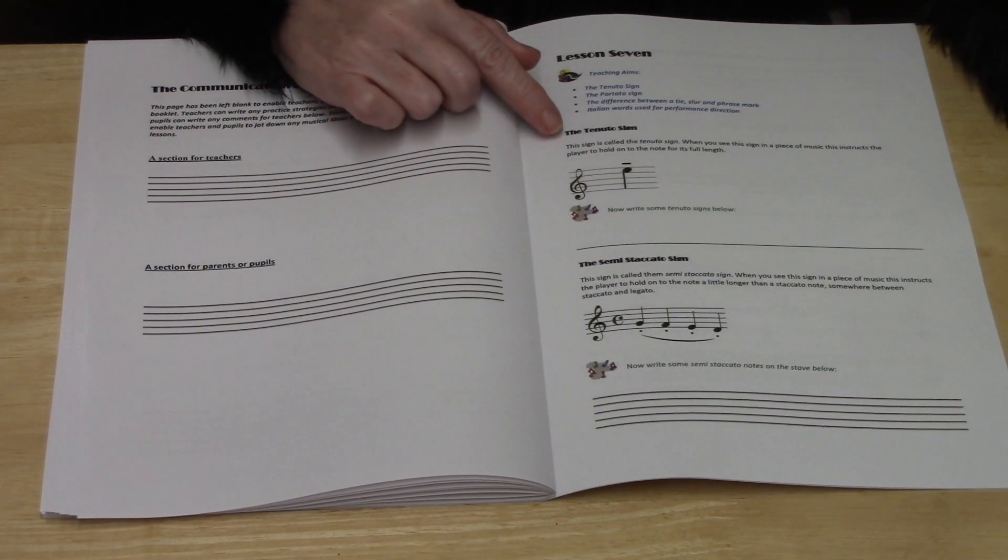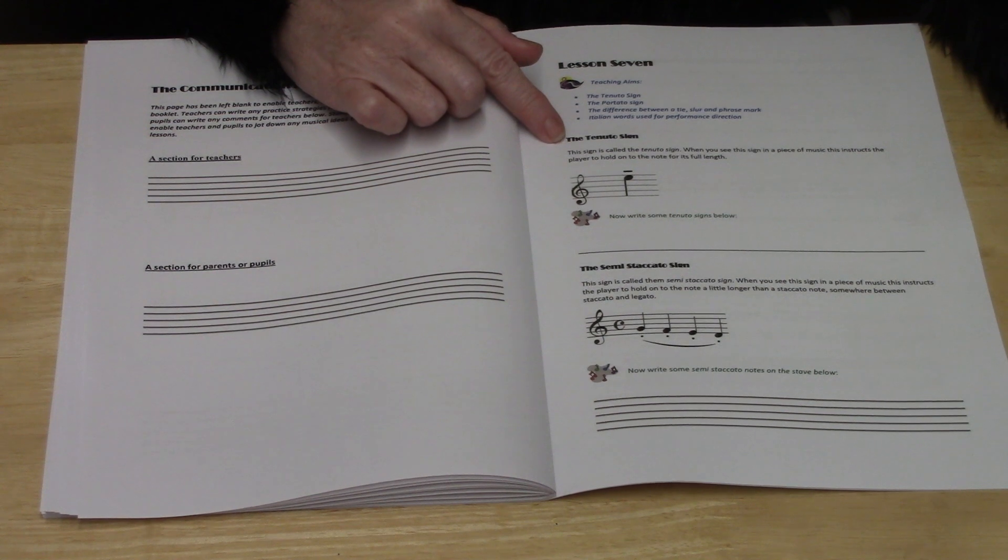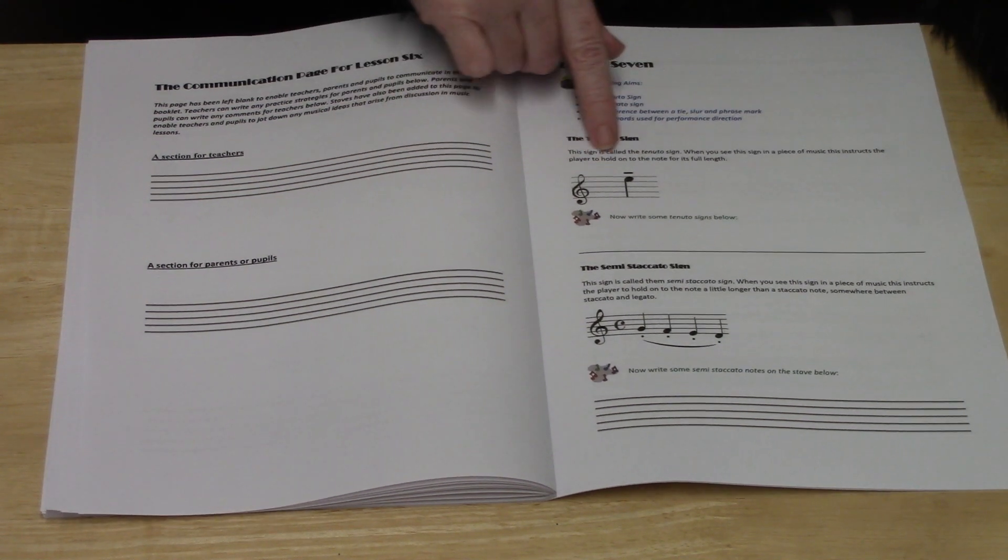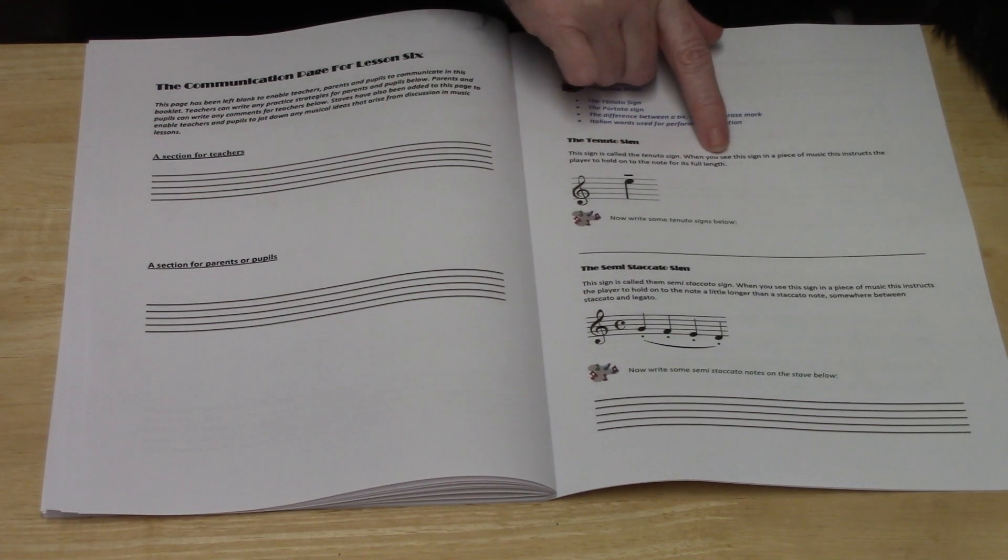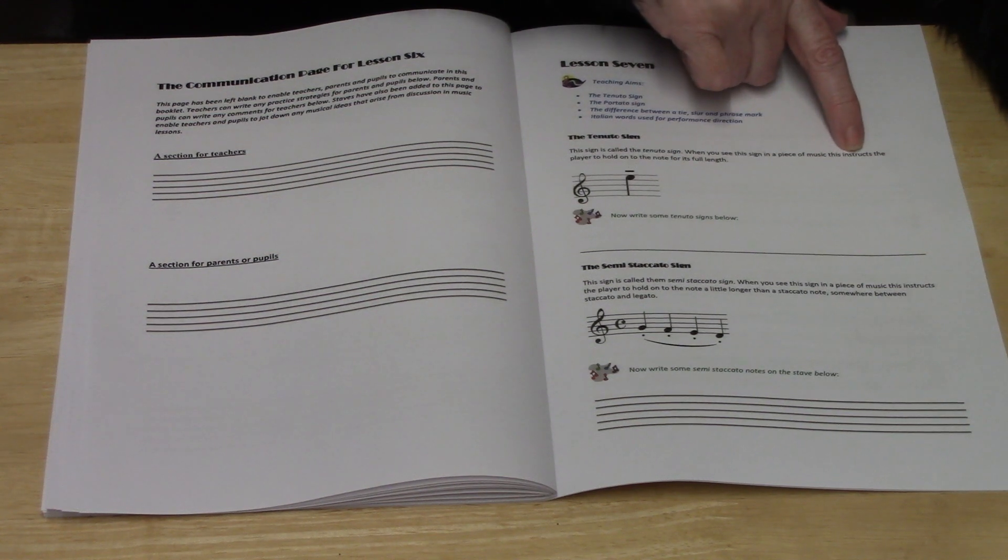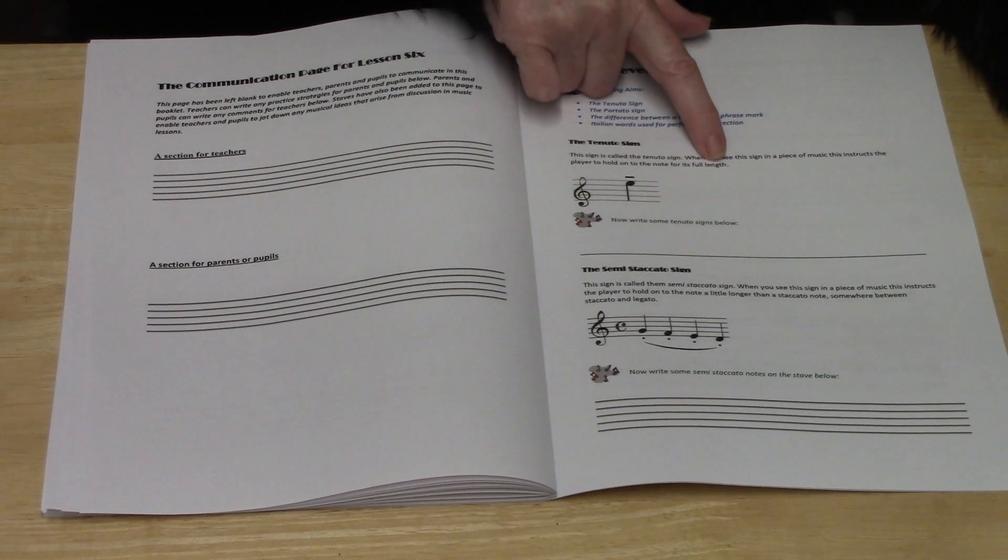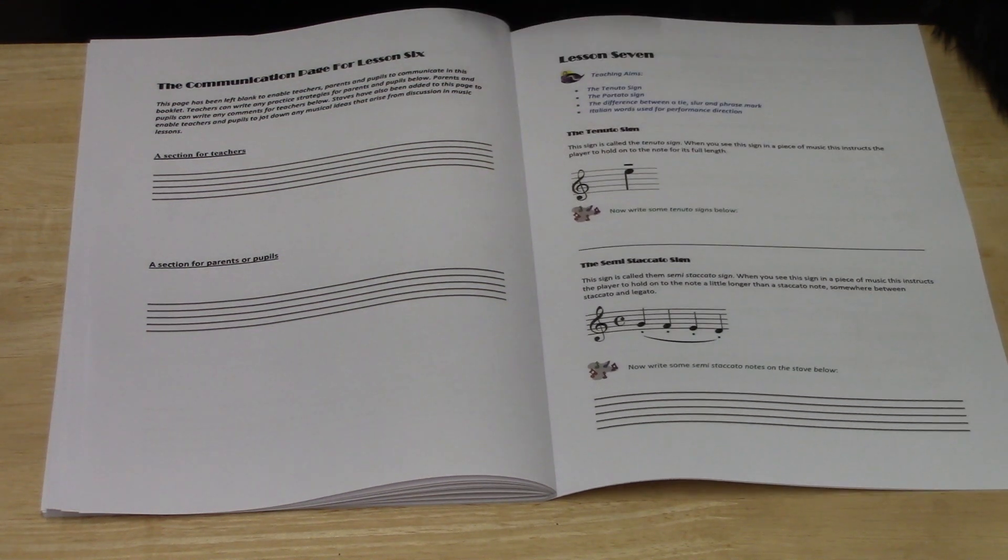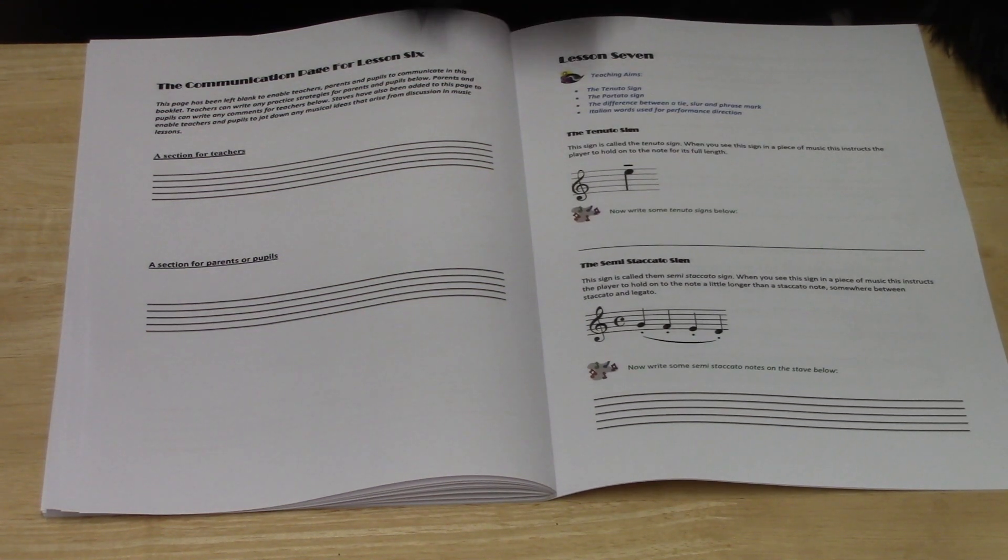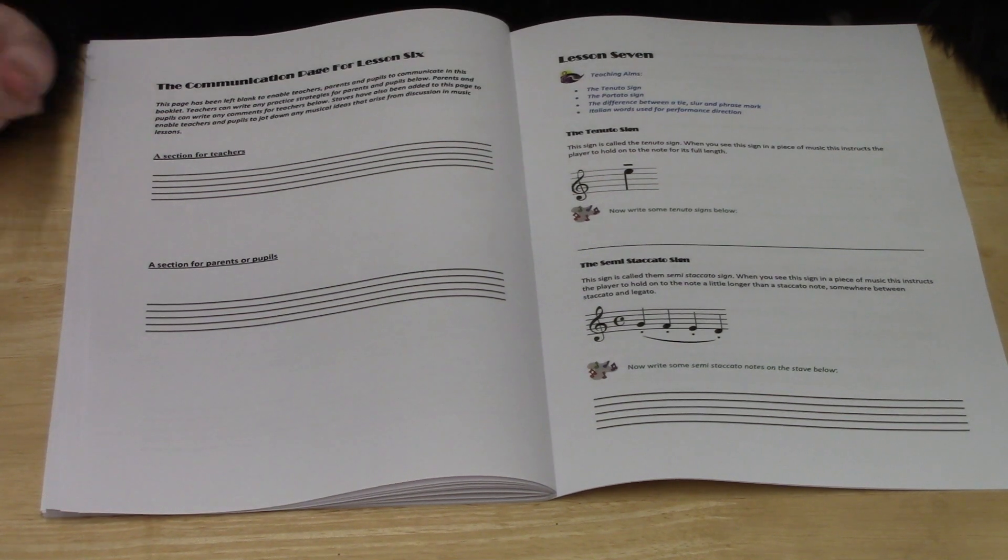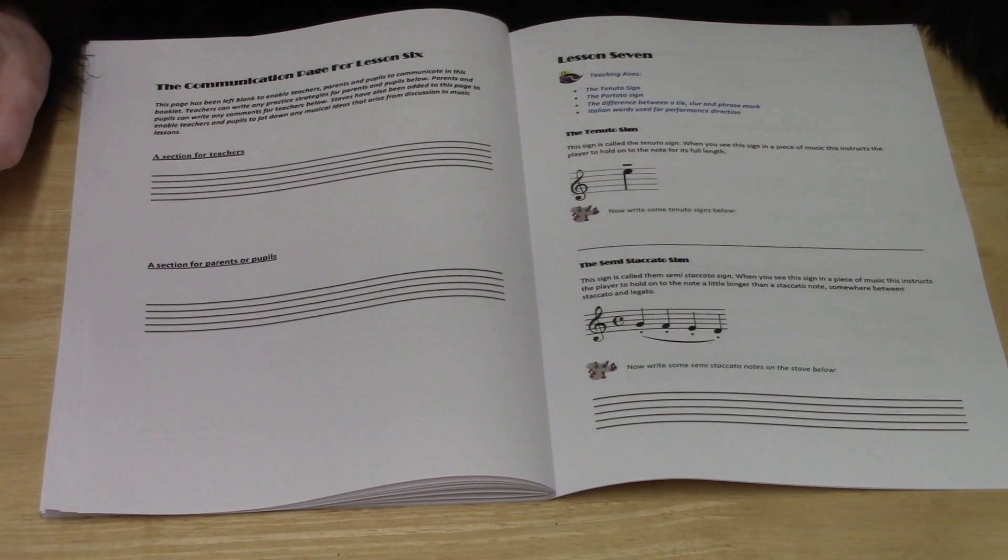Let's start by looking at the tenuto sign. When you see this sign in a piece of music, it instructs the player to hold on to the note for its full length. It's a little line that goes over the note. You're then asked to practice writing some of those tenutos on the line below.